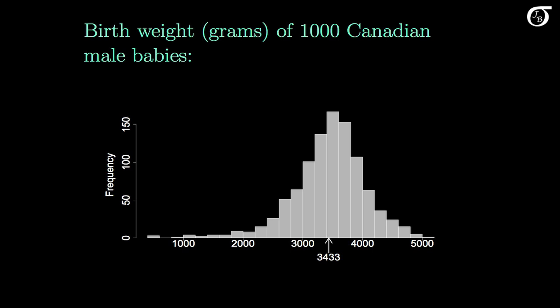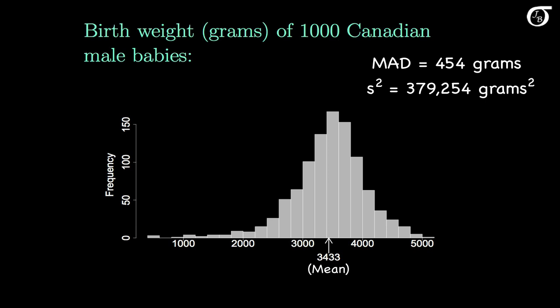Here's a histogram representing the birth weights of 1,000 randomly selected Canadian boys, with the mean drawn in at 3,433 grams. Going back to the original raw data: the mean absolute deviation is 454 grams — coincidentally about a pound — meaning on average these babies are 454 grams away from the mean. The variance is 379,254 grams squared, and the standard deviation is the square root of that, which works out to 616 grams. The standard deviation is a fair bit bigger than the mean absolute deviation for this data set.